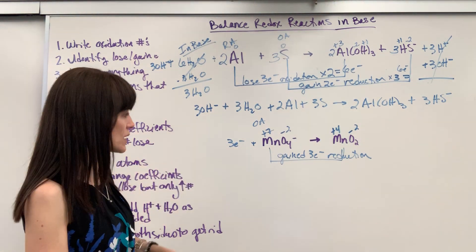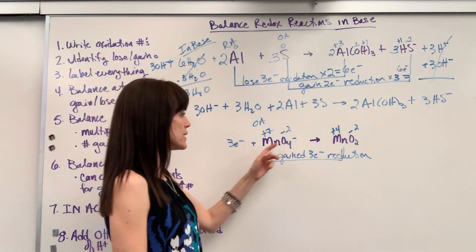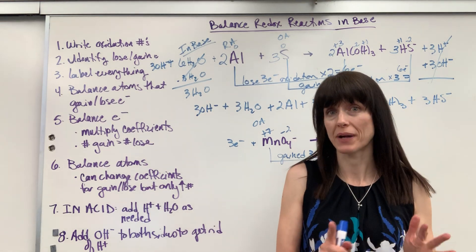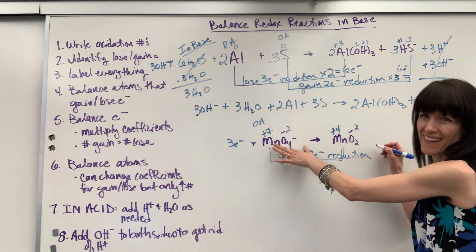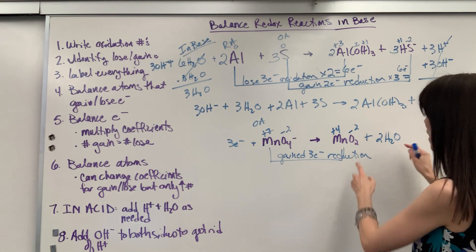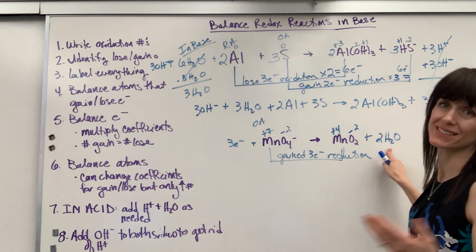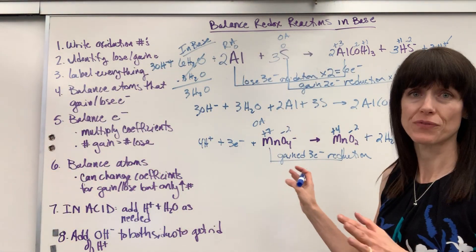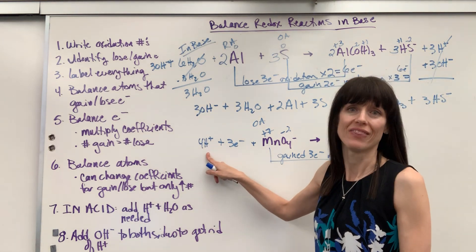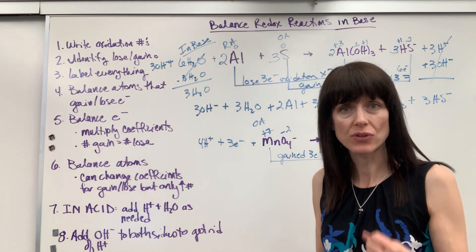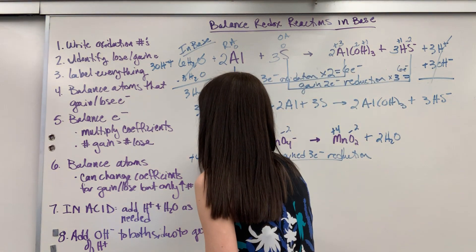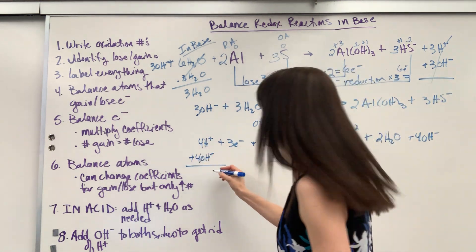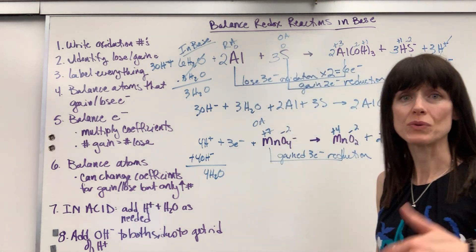Now we balance all of the atoms. One manganese, one manganese. Four oxygen and two oxygen — we're going to pretend we're balancing an acid, so I add two water molecules to give four oxygen on each side. But when I did that, I added four hydrogen, so I put four hydrogen ions on the other side. Now if we were balancing an acid, we'd be finished — but we're balancing a base and I cannot leave that hydrogen ion. I add enough hydroxide to neutralize it: four moles of hydroxide. Whatever I do to one side, I do to the other side — so plus four moles of hydroxide on the product side.